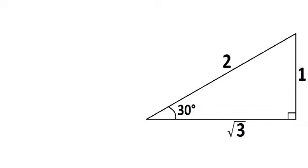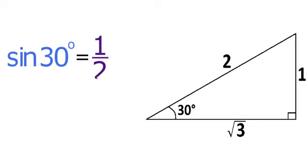You can also use this same triangle to find the values of trig ratios when theta equals 30 degrees. For example, the sine of 30 degrees equals O over H, which equals 1 half.